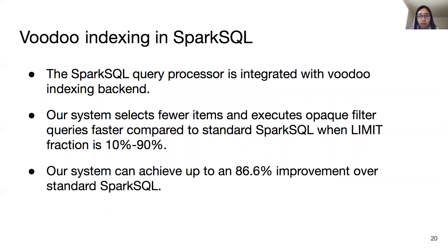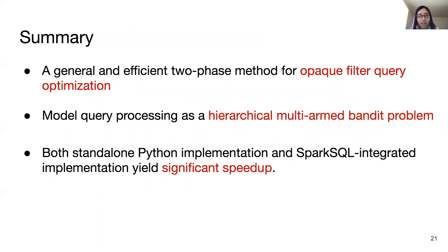In summary, we have designed a general and efficient two-phase method for opaque filter query optimization. We model query processing as a hierarchical multi-armed bandit problem, and we implement both a standalone Python system and a SparkSQL-integrated system. Both yield significant speedup. Thank you very much for your attention.